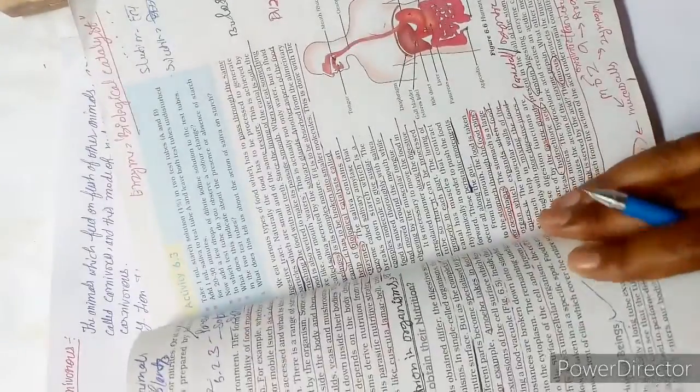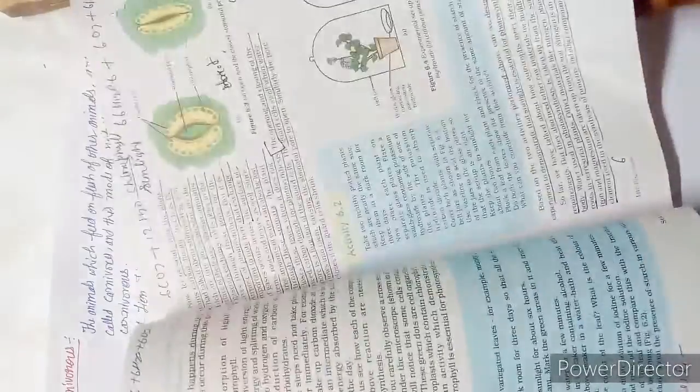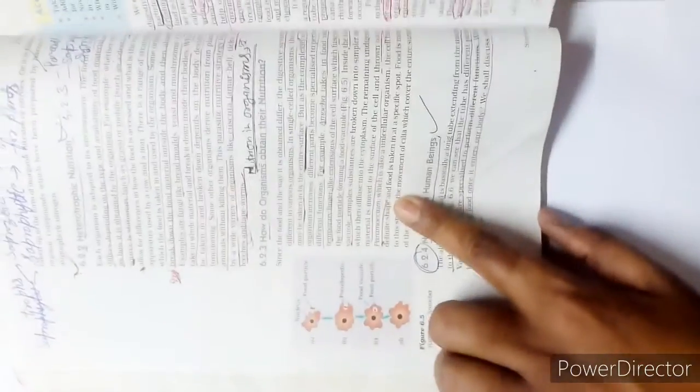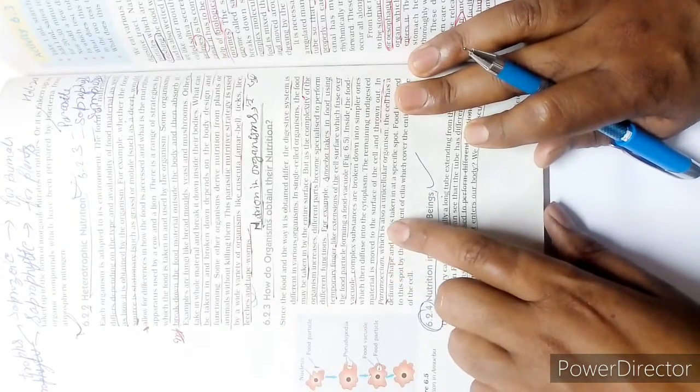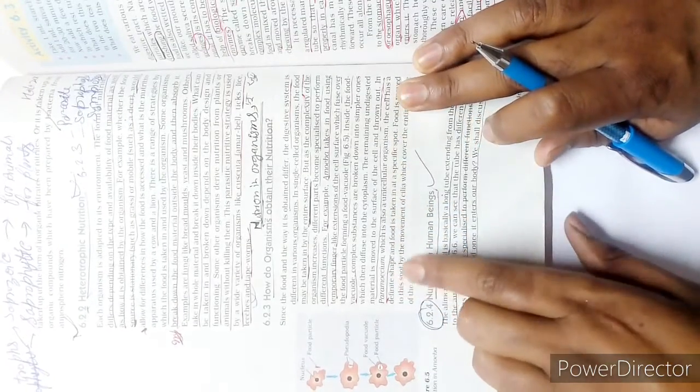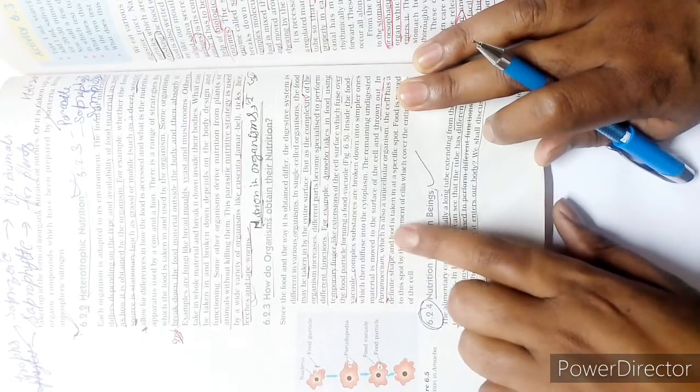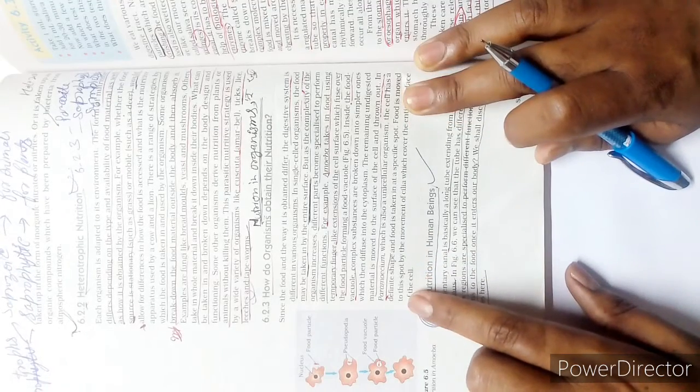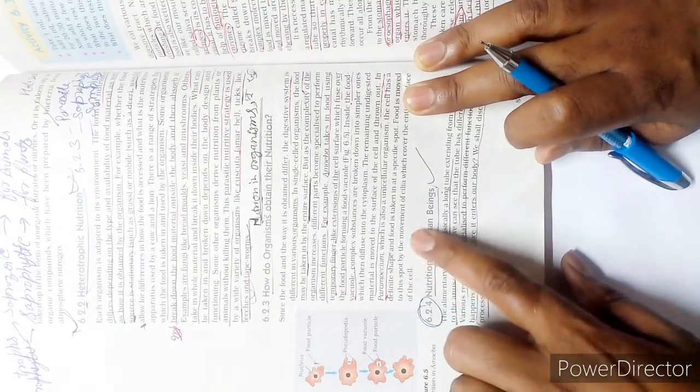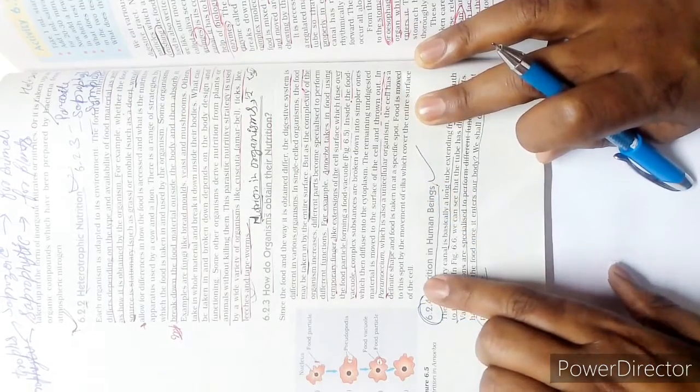One more thing about paramecium. Paramecium is also a unicellular organism. The cell has a definite shape, and food is taken in at a specific spot. Food is moved to the spot by the movement of cilia which cover the entire surface of the cell.